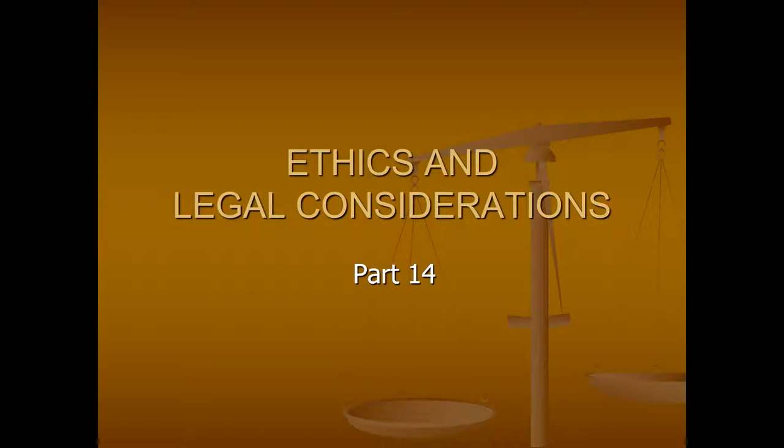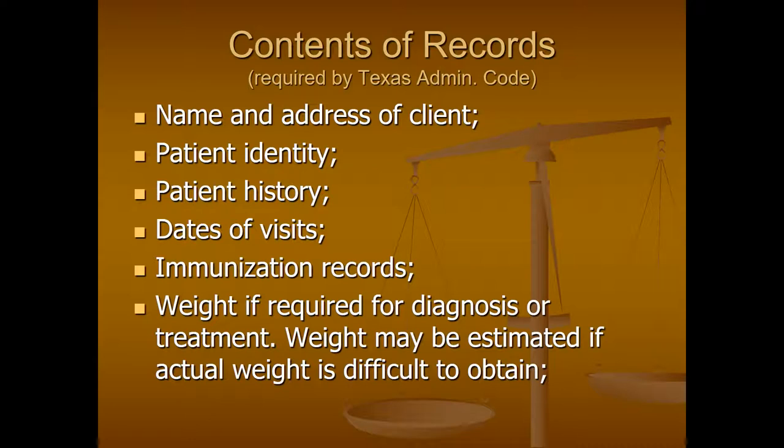This is the 14th and last video for the ethics and legal considerations part of the animal chiropractic class. We're going to continue and finish up talking about record keeping. Texas Administrative Code — the regulations adopted by the veterinary board — include specific requirements for the contents of records. A number of other states have similar regulations, and I recommend you pay attention to those regulations. For chiropractors in particular, this gives you a good guideline for the information that needs to be in the records and helps establish good credibility with the veterinarians supervising the care you provide.